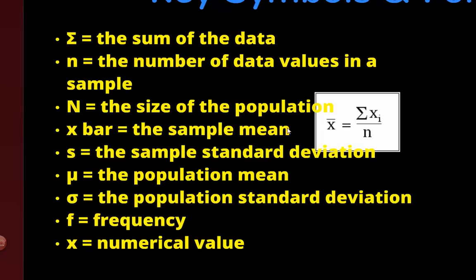X-bar is the sample mean — we add up the values and divide by n. Lowercase s is the sample standard deviation. The Greek letter mu stands for the population mean. And the Greek letter sigma — which looks like a weird six — is the population standard deviation.